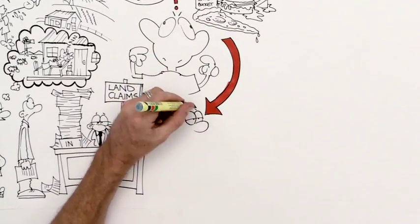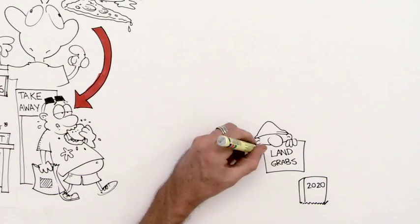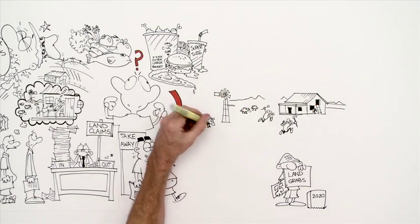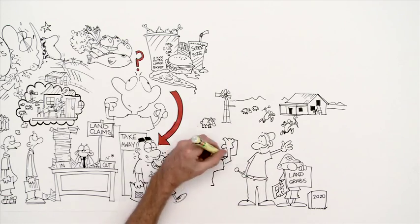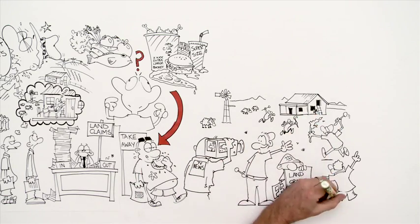By 2020, land invasions escalate. They've moved from random occurrences to orchestrated events scripted for the cameras. The result is fear in some and hope in others. Many commercial farms are abandoned and the farmers emigrate.